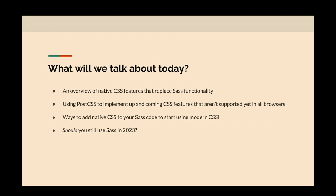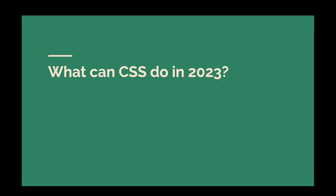What will we talk about today? I'm going to talk about an overview of the native CSS features that will replace or can replace Sass functionality. I'm going to talk about using PostCSS to implement up-and-coming CSS features that aren't supported in all browsers, ways to add native CSS to your Sass code so you can start using modern CSS today. And at the end, I'll address: should you use Sass in 2023 and beyond?